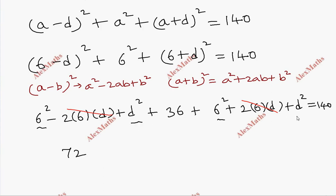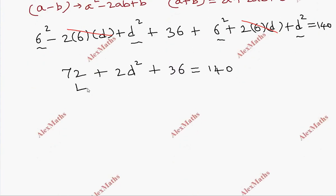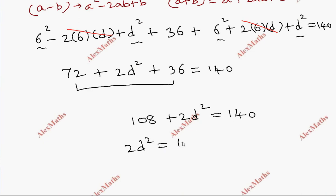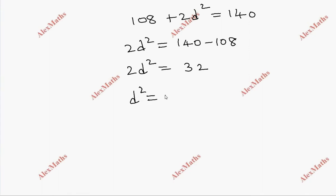So 72 + 2d² = 140. Adding: 108 + 2d² = 140 — wait, 36 + 36 + 36 = 108 plus 2d² = 140. So 2d² = 140 - 108 = 32, giving d² = 16, and d = ±4.